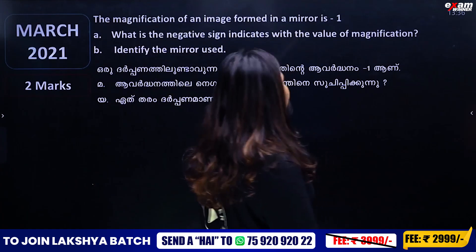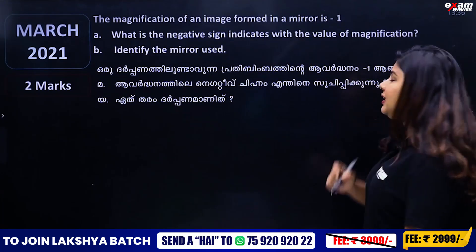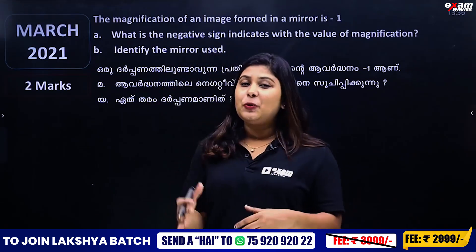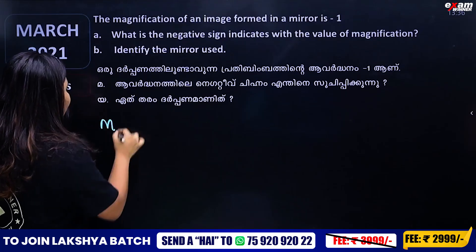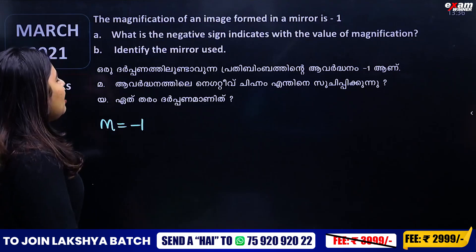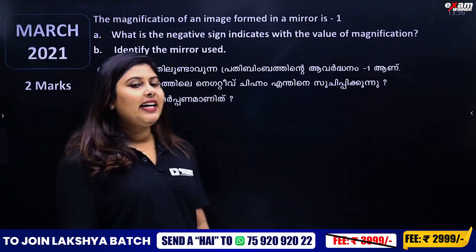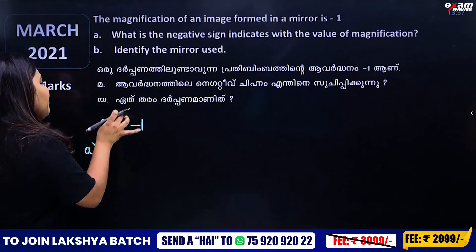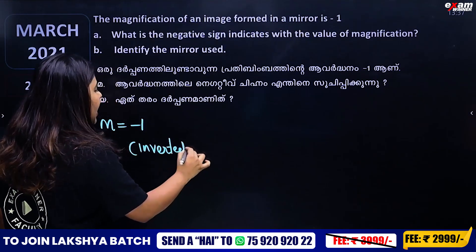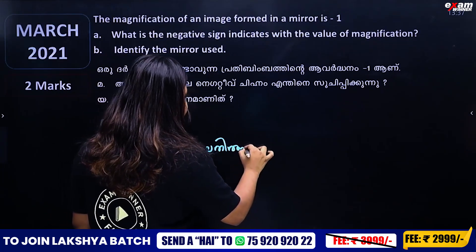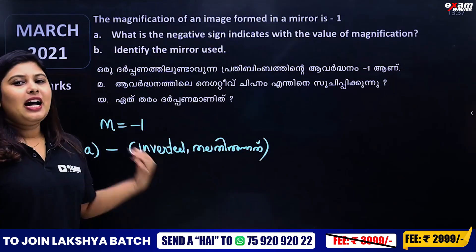The magnification of an image formed in a mirror is minus 1. What does the negative sign in the value of magnification indicate? The negative sign indicates that the image is real and inverted.